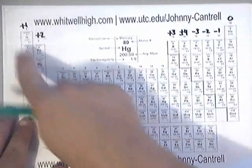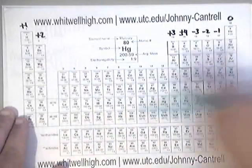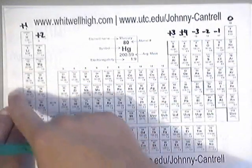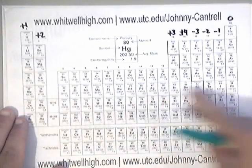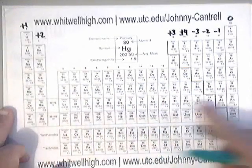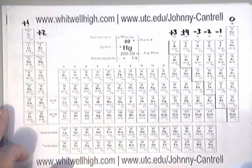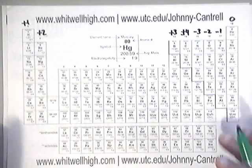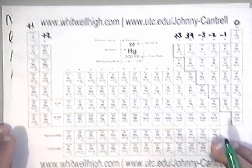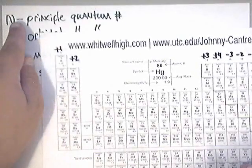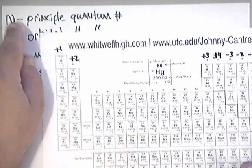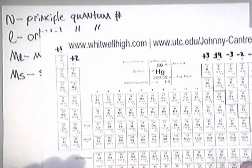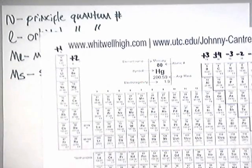There are 7 rows on the periodic table. So, if you will just think of the principal quantum numbers being these rows on the periodic table, that will help a lot. N is just the row number it's in, basically like its energy level.